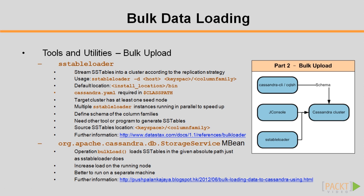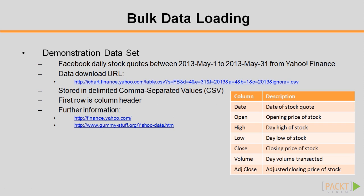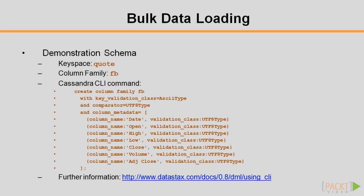Please note that the schema of the table is not created by SSTableLoader and has to be defined by Cassandra CLI or CQLSH. Instead of SSTableLoader, Cassandra also provides a bulk load operation in its storage service MBean. You may visit the given URL for further information. I'll give an example of loading Facebook Daily Stock Quotes in May 2013 into a Cassandra table. The quotes are in CSV format and can be downloaded at the URL provided. The fields of the CSV file include the date of the quote, the open, high, low, close prices, the volume, and the adjusted closing price. The target table is called FB under the quote keyspace. I'll use Cassandra's CLI command to create the quote keyspace and the FB table. The column names should match the fields of the CSV file.